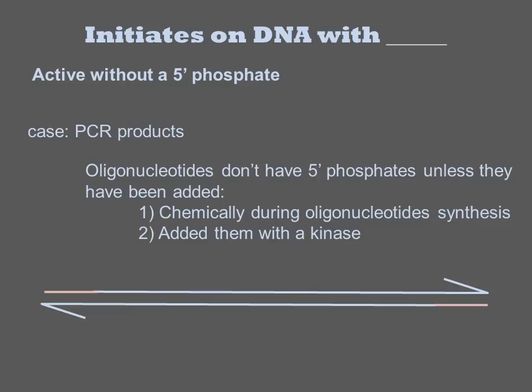Some exonucleases require a 5' phosphate. A DNA would lack a 5' phosphate if it is synthesized chemically or if it was treated with a phosphatase. Because the 5' ends of a PCR product are the actual atoms that were in the oligos — not just a copy — the ends of a PCR product similarly will lack 5' phosphates. Phosphates can be re-added with a kinase.